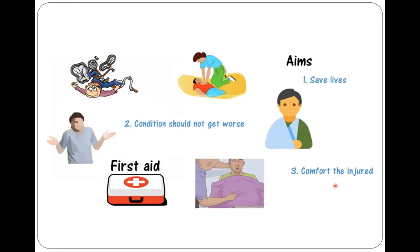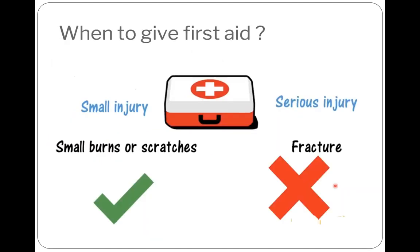It is very important for you to know what to do when an accident occurs. You should know about first aid — when to give it and when not to give it. You should give first aid only if the injury is small, for example a small burn or a small scratch. Even then, call for an adult. If the injury looks serious — for example, if the injury is inside the body and the injured person is in great pain — there can be broken bones, which we call a fracture, or internal bleeding. In such a condition, do not try to give first aid yourself. Immediately call an adult and rush to the hospital.